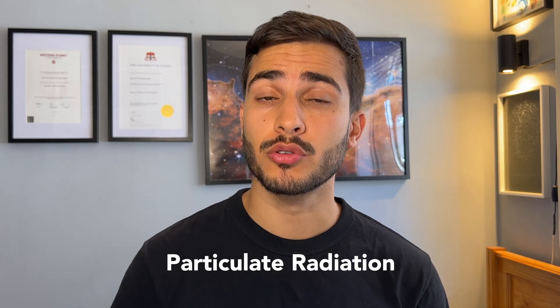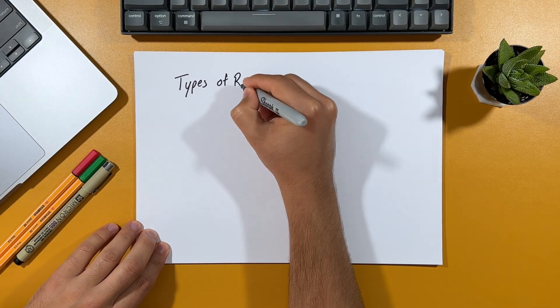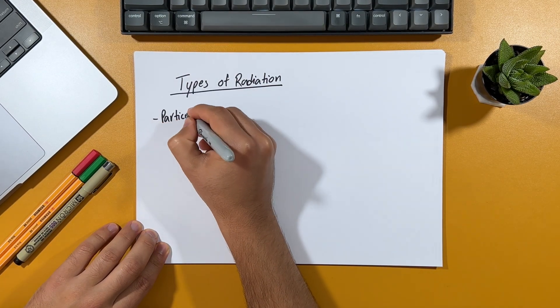In total, there are five main types: alpha particles, beta particles, neutrons, x-rays and gamma rays. The first three are known as particle radiation, and the other two are known as electromagnetic radiation. And so in this video, I'm going to take you through all of these types of radiation, which will help us with the foundational understanding required to fully appreciate medical imaging. We'll start off by going through particulate radiation, which as the name suggests, is comprised of particles that have mass.